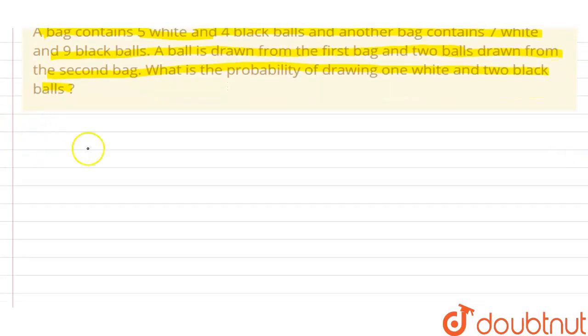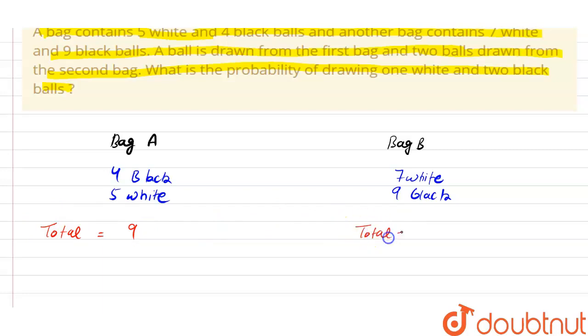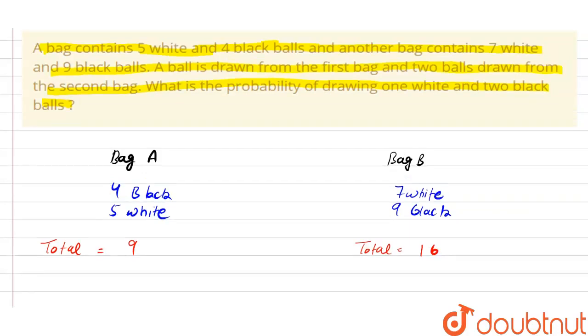Let's start. First of all, we know that bag A contains 4 black balls and 5 white balls, and bag B contains 7 white and 9 black balls. Total balls that bag A contains is 9, and total balls that bag B contains is 16. Now, what we have to find out?